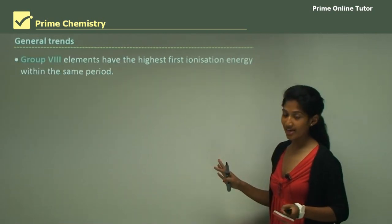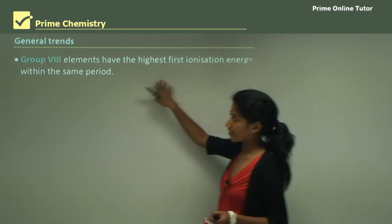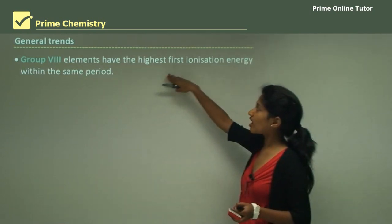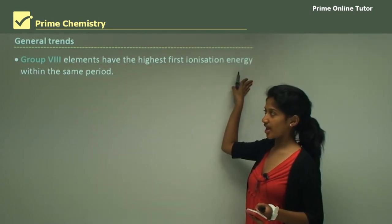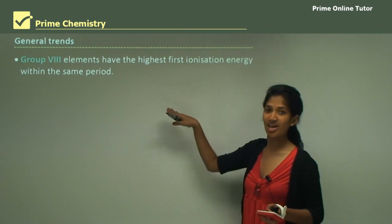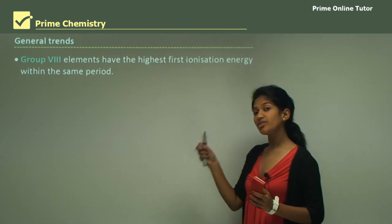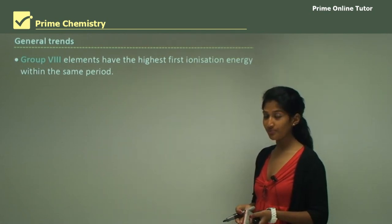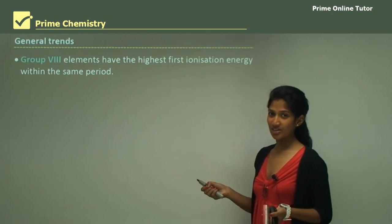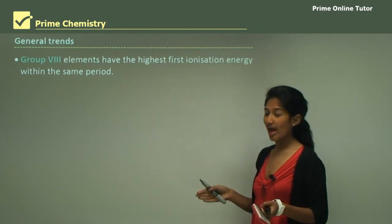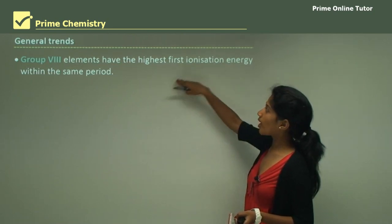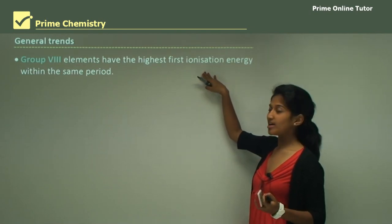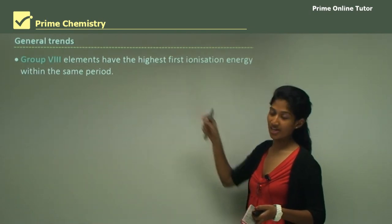Looking at general trends: Group 8 elements — noble gases — have the highest first ionization energy within the same period. Because they have a full outer shell, they don't want to react at all. That's why their first ionization energy is quite high compared to the rest of the period.